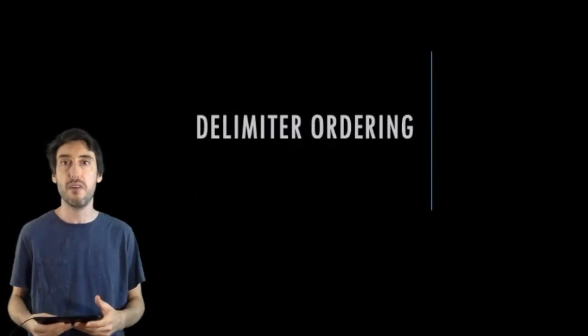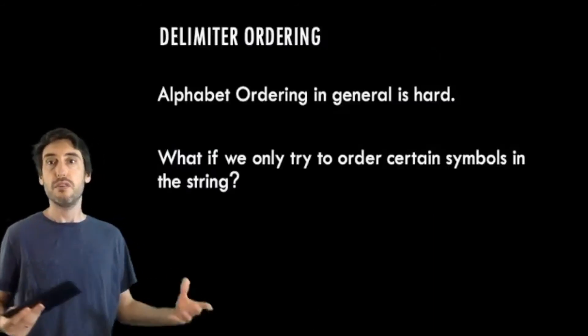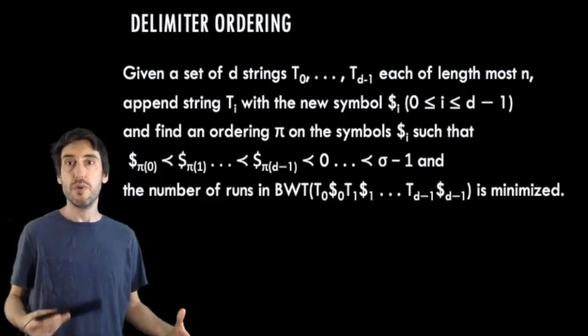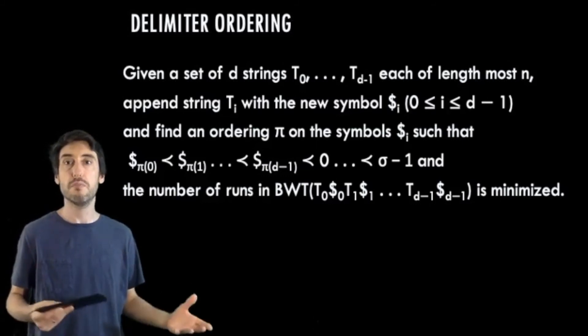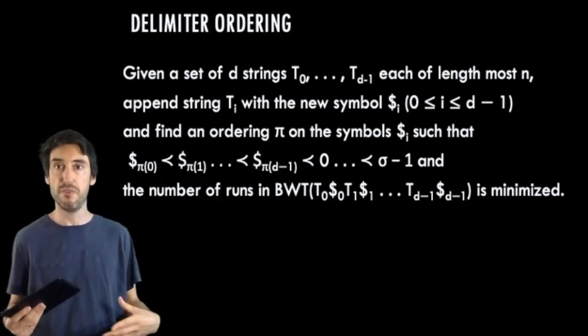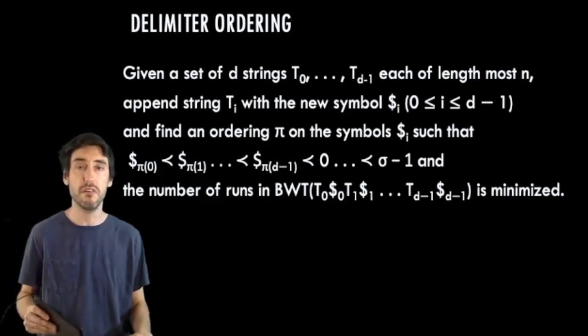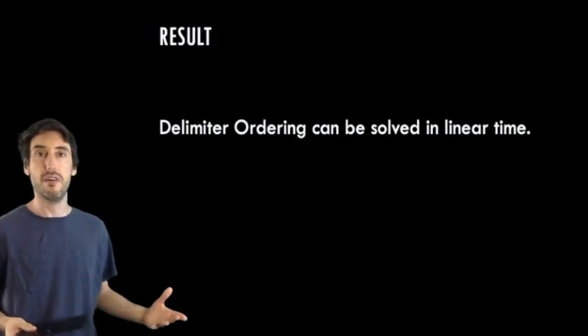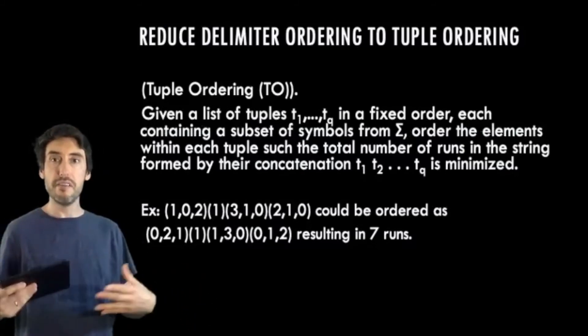I would lastly like to discuss a positive result we have on the same topic. So this time we'll look at a more restrictive type of ordering on the alphabet. So we know that trying to order all the symbols is computationally hard. But what if we only try to order a specific subset of the symbols? So we call this particular version of the problem delimiter ordering. And that is, given a set of d strings, t0 up to td minus 1, each of length at most n, we want to append to each ti a new symbol dollar i, and we want to find an ordering on the dollar symbols, such that they're ordered first, and that the number of runs in the BWT is minimized. Note that these really don't have to be considered as delimiters, but we choose to do so because of some applications in bioinformatics. So evidently, this problem is not nearly as hard. In fact, it can be solved optimally in linear time.